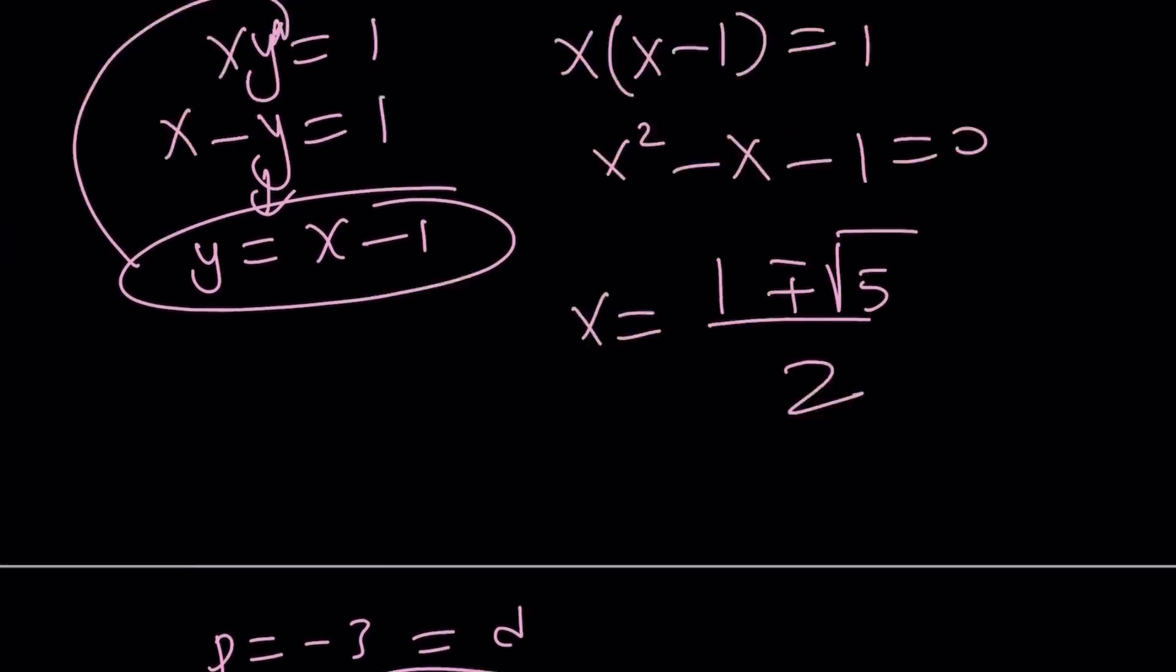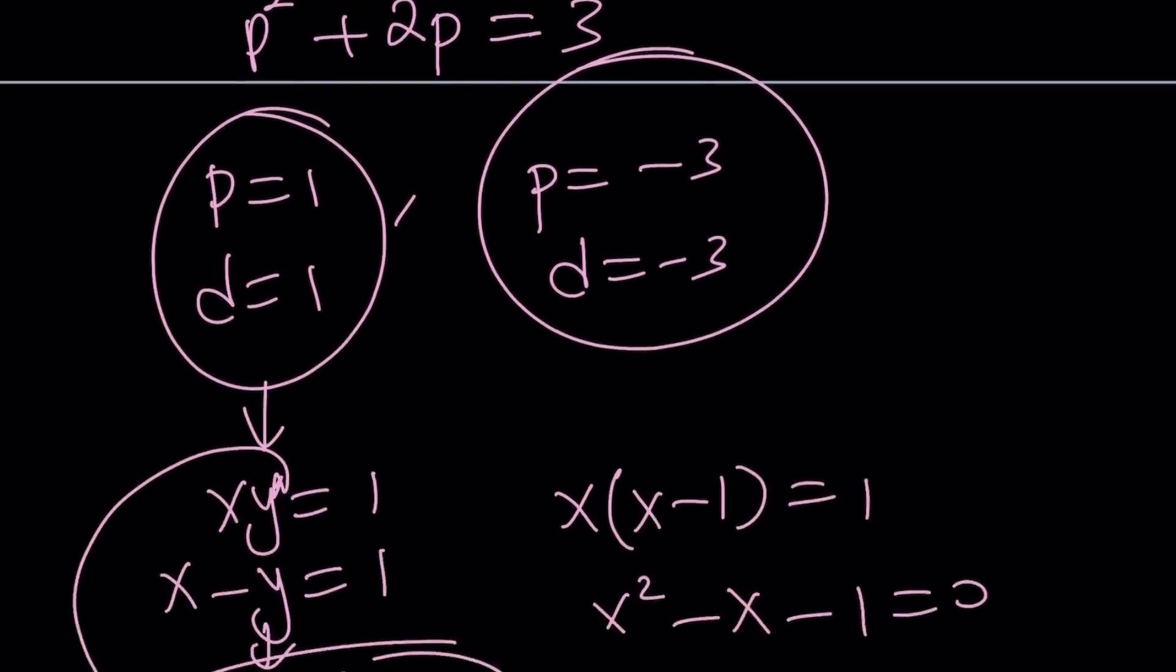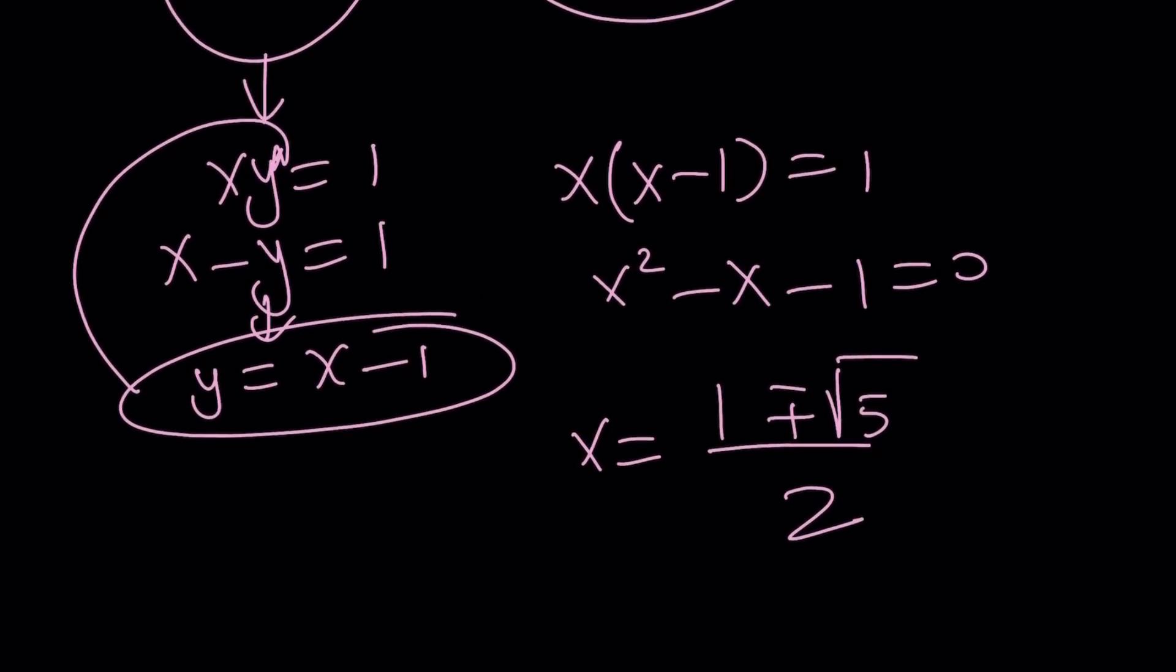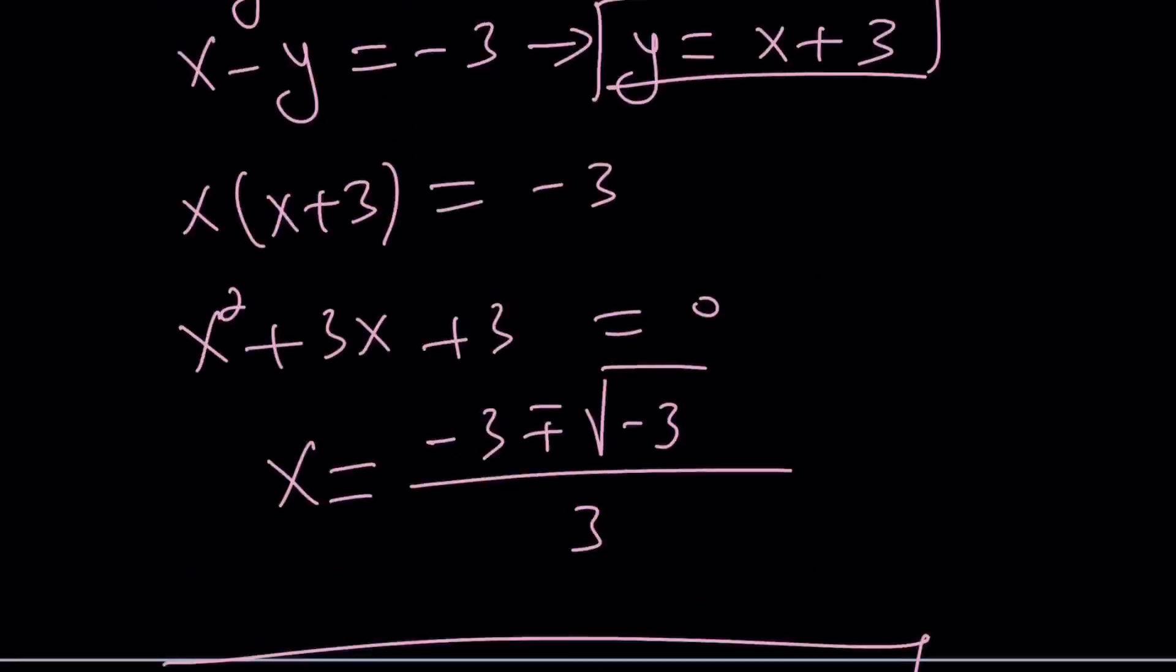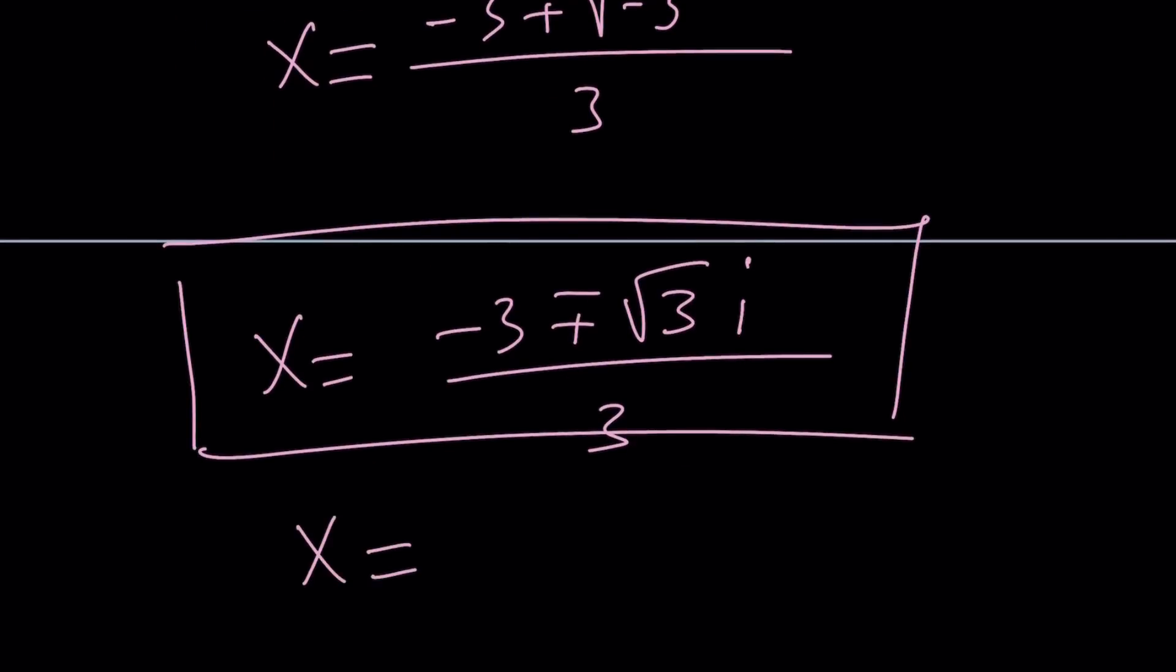So we got this, and we got the other one which is 1 plus minus root 5 over 2. Let's put them together: 1 plus minus root 5 over 2. And we got four solutions as hinted.